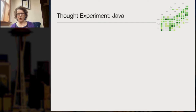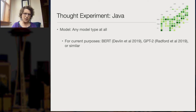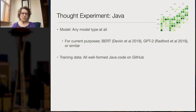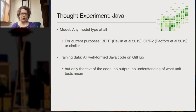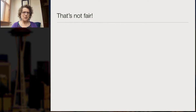So if babies don't learn language from form alone, maybe a computer could anyway. We're going to show you that's not the case by going through two thought experiments. The first sets aside natural language and looks at Java, the computer language. We are allowing ourselves any type of model — for concreteness, let's imagine BERT or GPT-2 or GPT-3. The training data is all of the well-formed Java code on GitHub — every last scrap of it, but only the text of the code: no output, no understanding of what the unit tests mean, just the text. At test time, we give the system a single Java program, possibly even one from the training data, and expect it to give us back the result of executing that program.